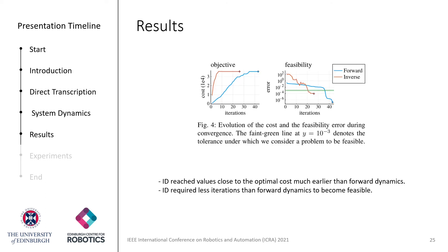Finally, we compared how both approaches performed when a cost function was considered. The plot on the left shows that inverse dynamics reaches the local optimum in fewer iterations than forward dynamics. The plot on the right shows that the number of iterations required to reach feasibility was also less for inverse dynamics than forward dynamics. In conclusion, the results show that inverse dynamics surpassed forward dynamics in all fronts — therefore, we should use inverse dynamics to enforce dynamic consistency in direct transcription formulations.